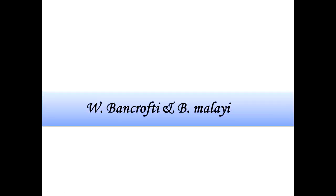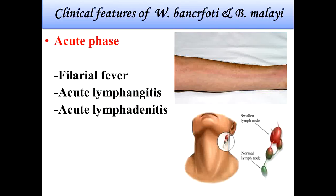Regarding Wuchereria bancrofti and Brugia malayi, the pathogenesis involves inflammatory damage by the adult worm, lymphatic vessel occlusion resulting in edema, and enlarged fibrotic lymph nodes. The lymphatic vessels are either partially or completely blocked by thrombi or masses of dead worms, with a granulomatous reaction.